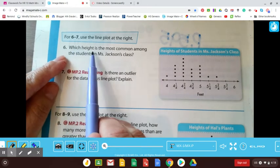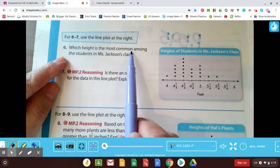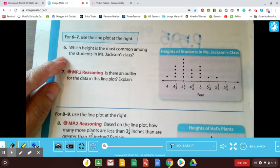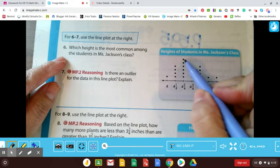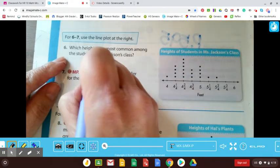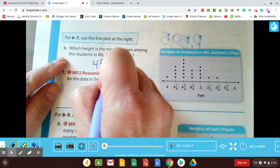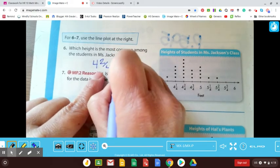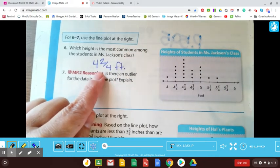Let's see. Which height is the most common among the students in Miss Jackson's class? So the most common height, the most dots seems to be right here. So that would be four and two fourths or four and a half feet tall. That's the most common.